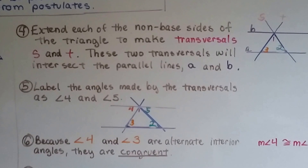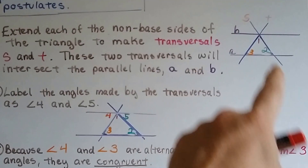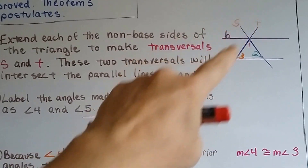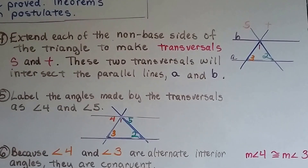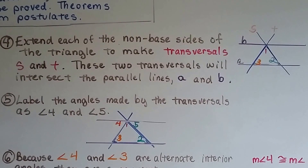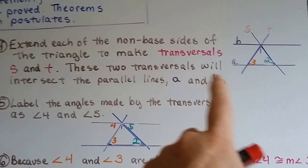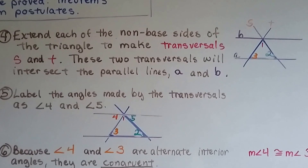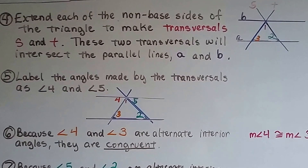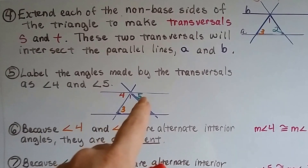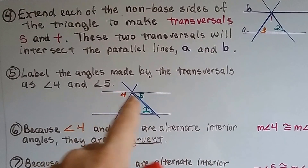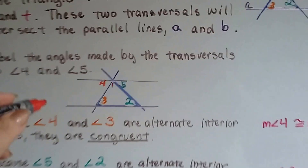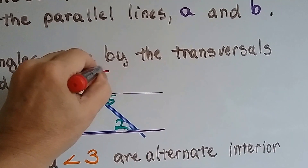Step 4 is to extend each of the non-base sides. The base is down here, so a non-base side would be this side of the triangle, and another non-base side would be this other side. We'll make transversals S and T. These two transversals will intersect the parallel lines A and B — intersecting A here and here, and intersecting line B right there at the vertex of angle 1.